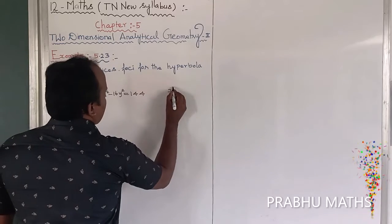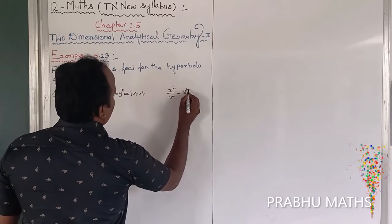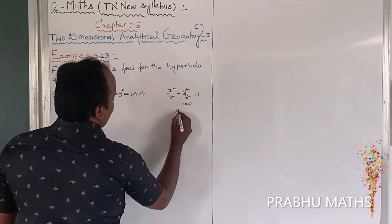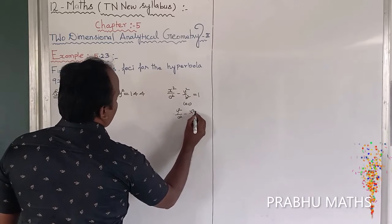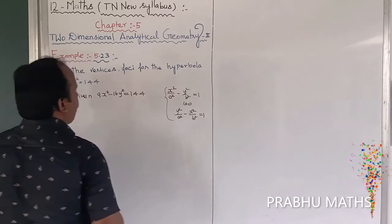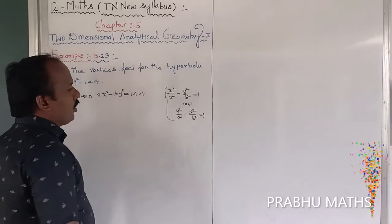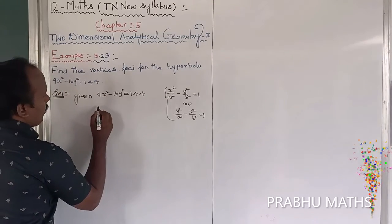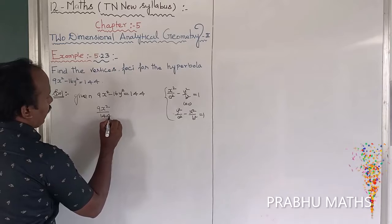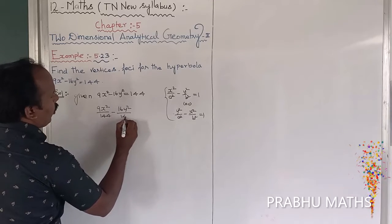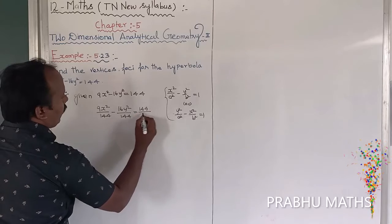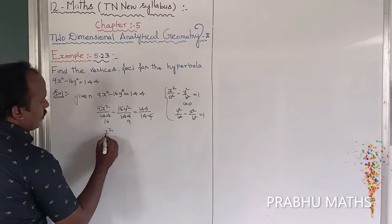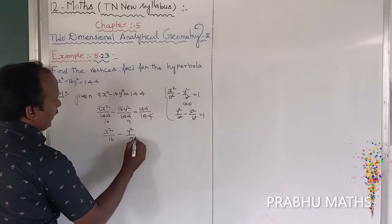The hyperbola general equation is x squared divided by a squared minus y squared divided by b squared equals 1. Since the right-hand side must equal 1, and we have 144, we divide both sides by 144. So 9x squared over 144 minus 16y squared over 144 equals 144 over 144. Cancelling gives x squared over 16 minus y squared over 9 equals 1.